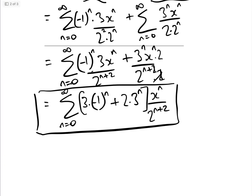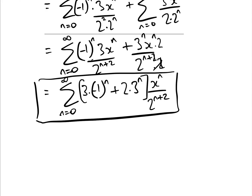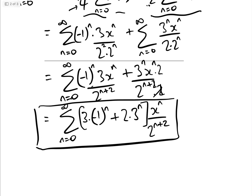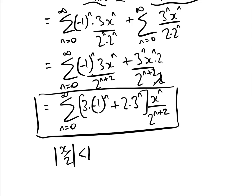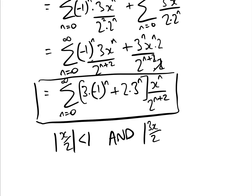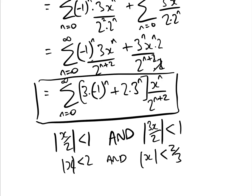That is the answer as desired. Now for the validity: each series requires its substituted variable's modulus to be less than 1. From the first series, mod(x/2) < 1 means mod(x) < 2. From the second series, mod(3x/2) < 1 means mod(x) < 2/3. Since both conditions must hold simultaneously, the expansion converges for mod(x) < 2/3.